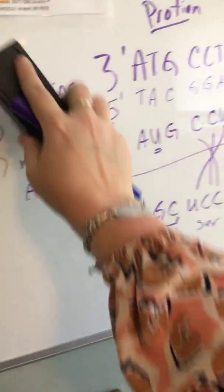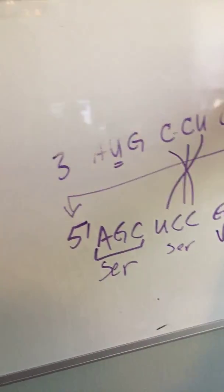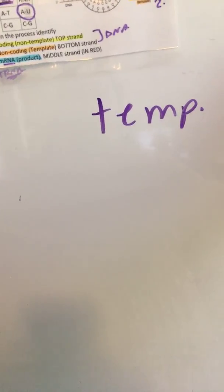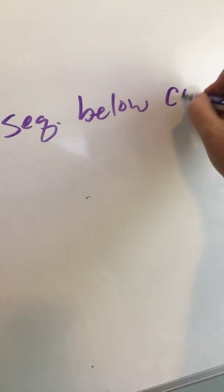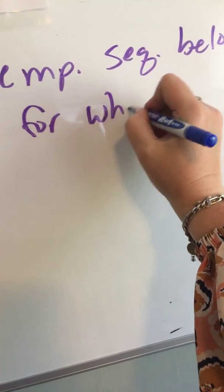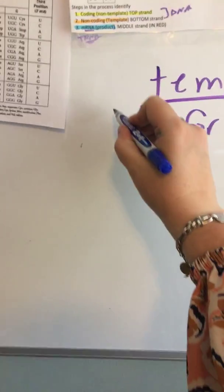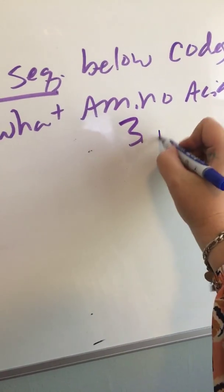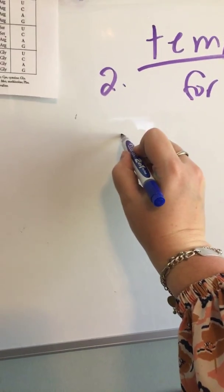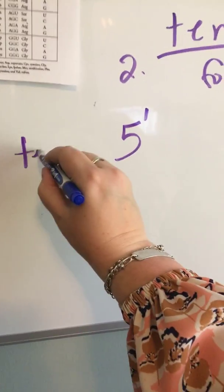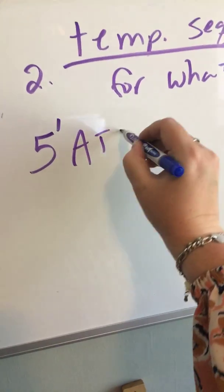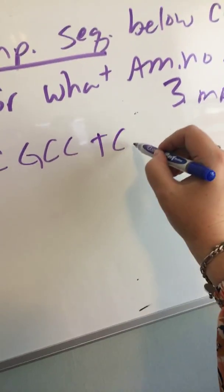Let's try another one. This is where we really have to start paying attention to how the question is written. If you have a question and the question says 'the template sequence below codes for what amino acid?', this is saying we're starting at step two, which is our template sequence, and we have to go to step three, which is our messenger RNA. Of course the questions are not going to be nice, so they're going to say the template sequence is 5' ATCGCCTCA 3' prime.